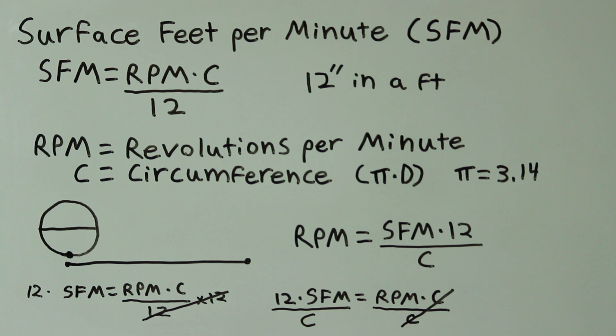An easy way of looking at surface feet per minute is how many feet would the cutting tool in a mill or the part in a lathe move if you roll them along the ground at their given RPMs and diameters in one minute.